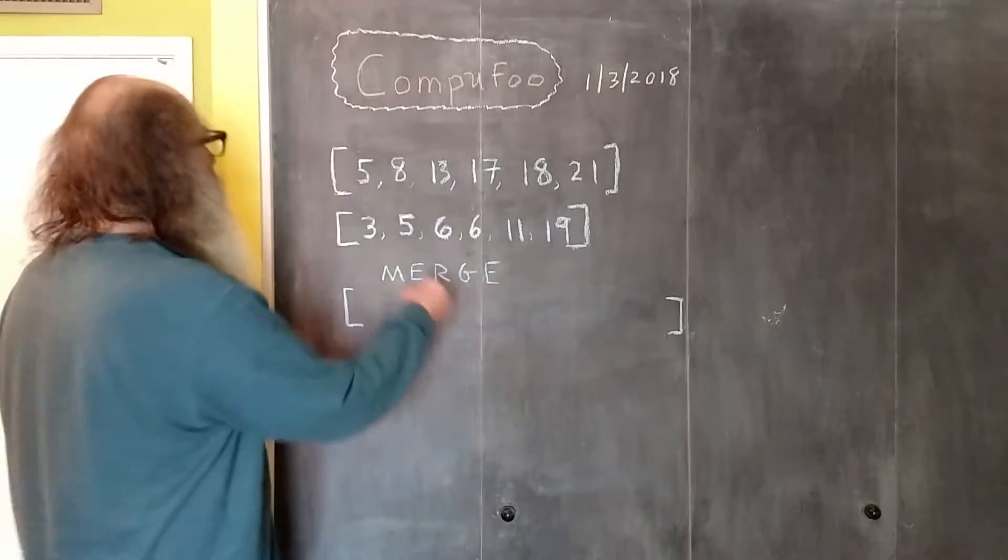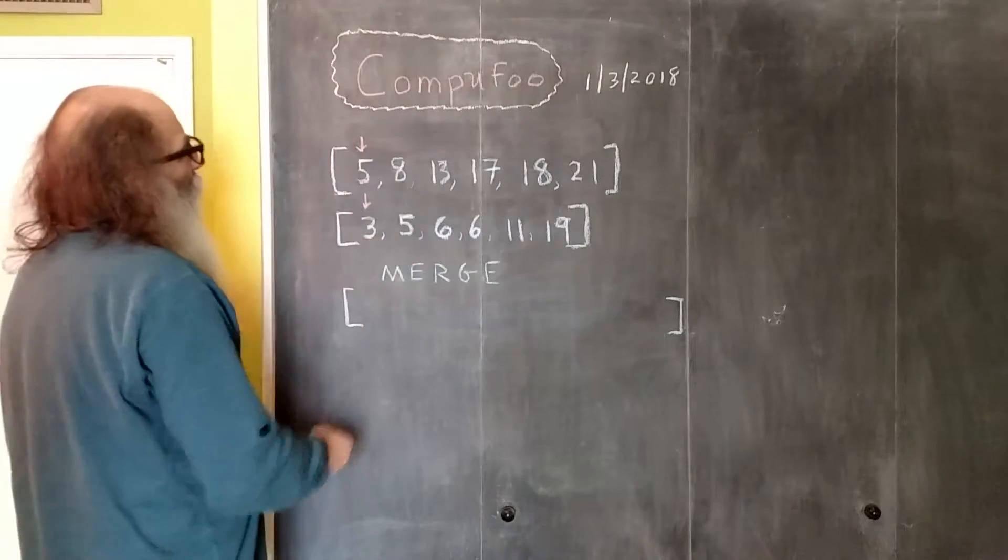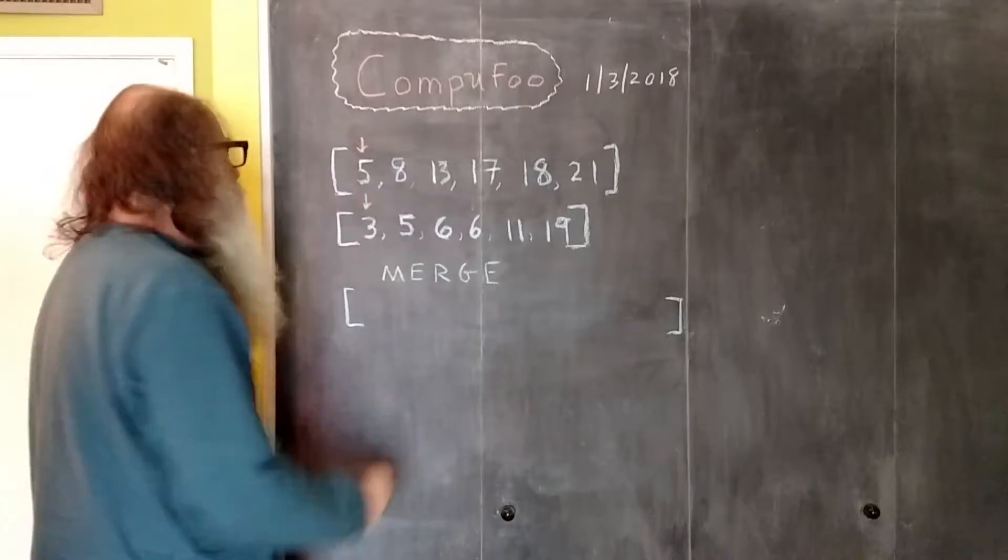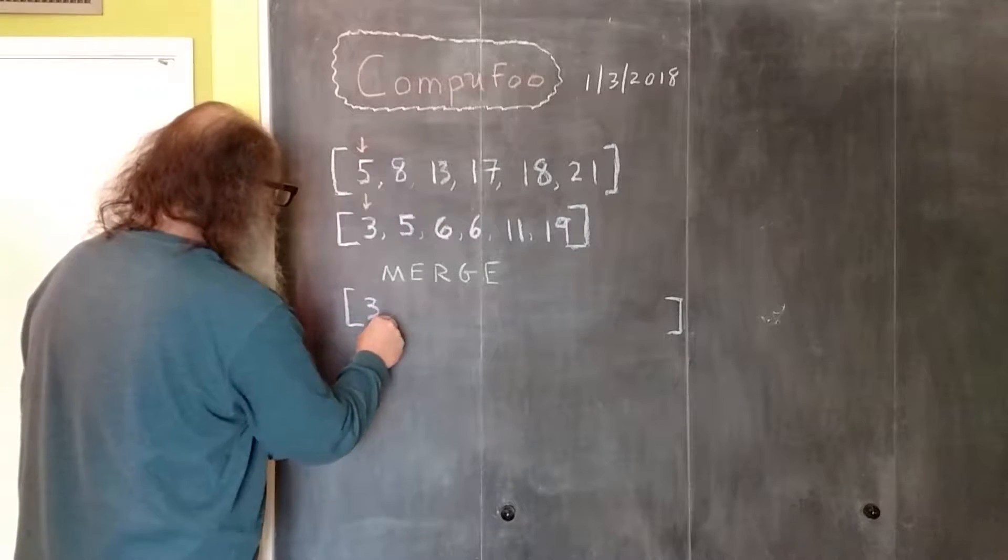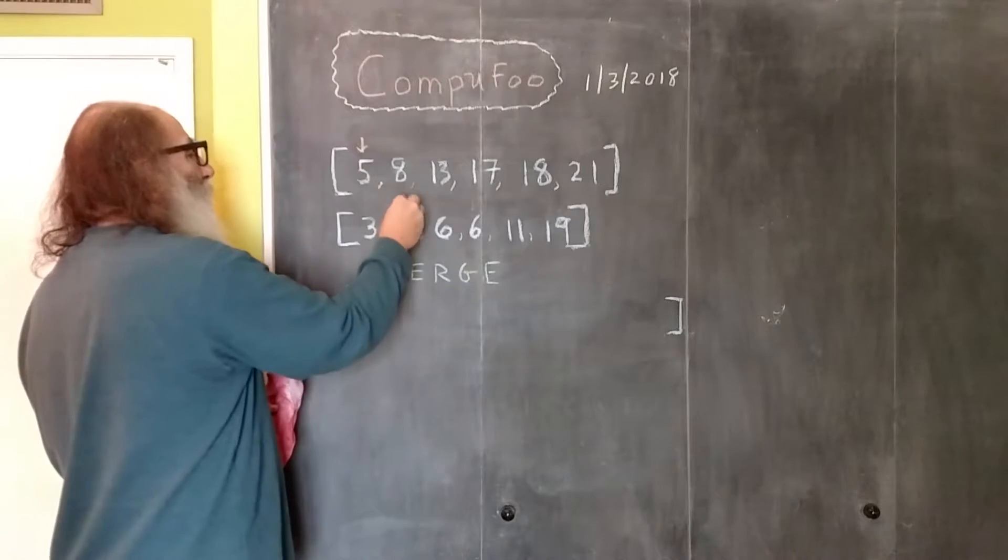So we set up two pointers, and we ask the question, is five less than three? No. So the three gets put into the merged array, and because we process that number, we increment the pointer.